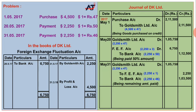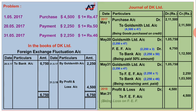The final journal entry to transfer this net loss: Profit and Loss Account Dr ₹4,500, To Foreign Exchange Fluctuation Account ₹4,500. Narration: Being loss on foreign exchange fluctuation transferred to Profit and Loss Account.